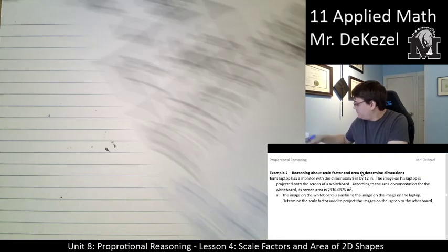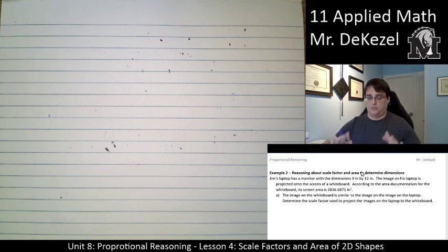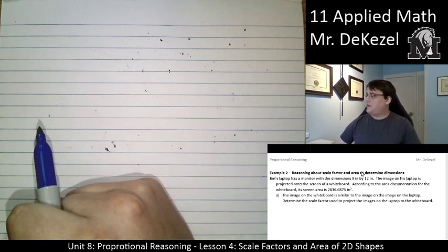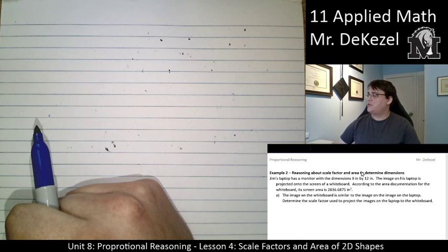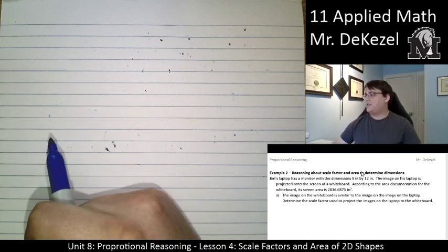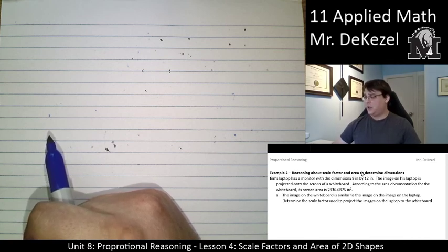Let's roll on into the next example. Jim's laptop has a monitor with the dimensions 9 inches by 12 inches. It's not a huge monitor. The image on his laptop is projected onto the screen of a whiteboard. It is assuming that it is exactly similar. According to the area documentation for the whiteboard, its screen area is 2,836.6875 inches squared. I'm going to probably round that in my calculations as I'm not sure it's going to make a huge difference once we get into that many decimals.